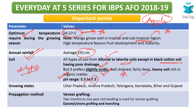The major mango-growing states are Uttar Pradesh, Andhra Pradesh, Telangana, Karnataka, Bihar, and Gujarat. In the previous lecture we also saw a variety specific to Bihar called Kishinbhog. We will further discuss varieties famous to each state in the coming sections.